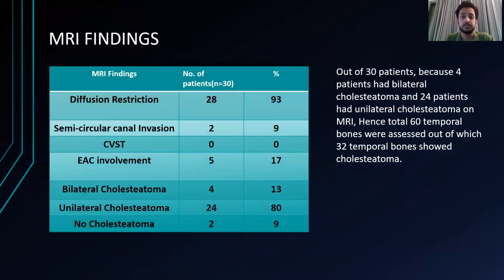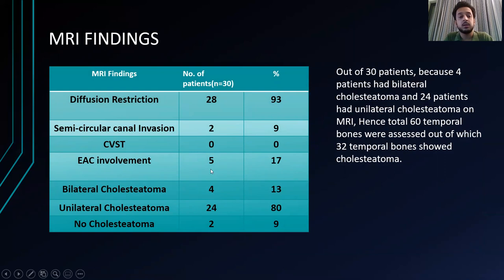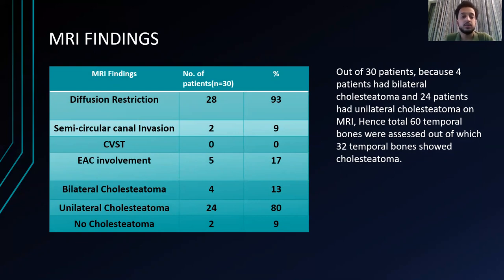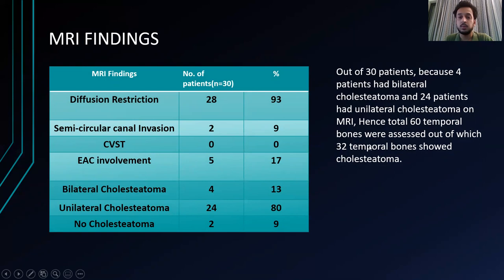The MRI findings showed diffusion restriction in 28 patients, semicircular canal invasion in two patients, no CVST, and EAC involvement in five patients. Bilateral cholesteatoma was seen in four patients, unilateral cholesteatoma in 24 patients, and no cholesteatoma in two patients. For bilateral cholesteatoma, two temporal bone studies per patient were considered, giving 60 total studies, of which 32 temporal bones showed cholesteatoma.